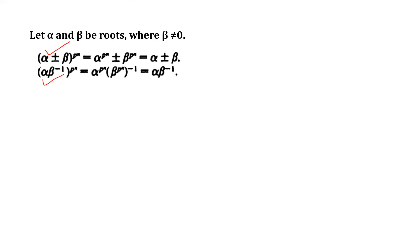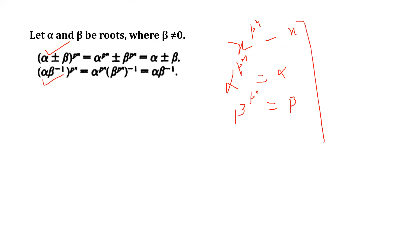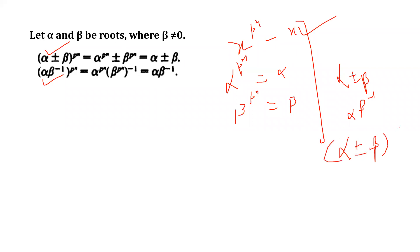Alpha and beta are roots of the polynomial x^(p^n) minus x, so alpha^(p^n) equals alpha and beta^(p^n) equals beta. We need to verify that alpha plus or minus beta, raised to the power p^n, equals alpha plus or minus beta. That means we have to show that alpha plus or minus beta is also a root of the same polynomial.